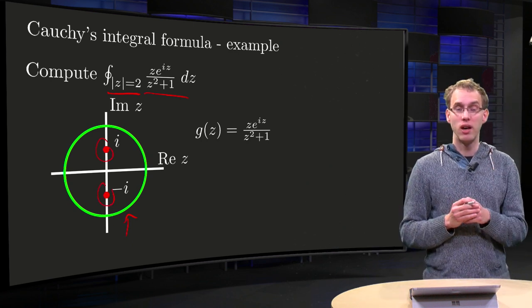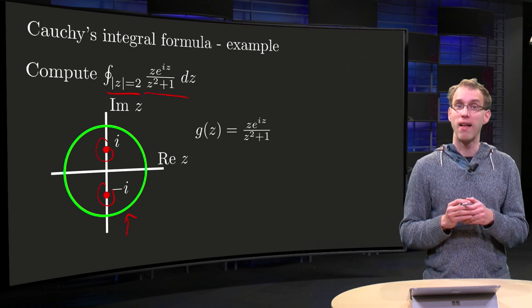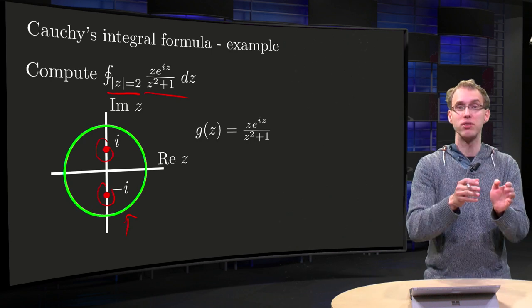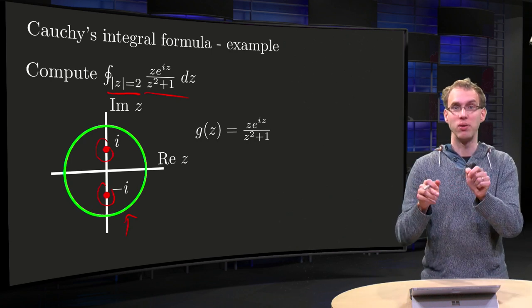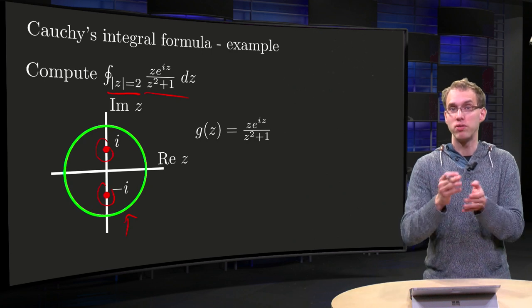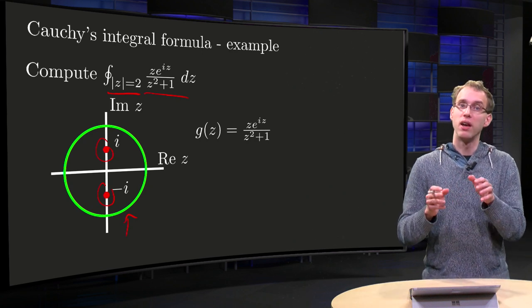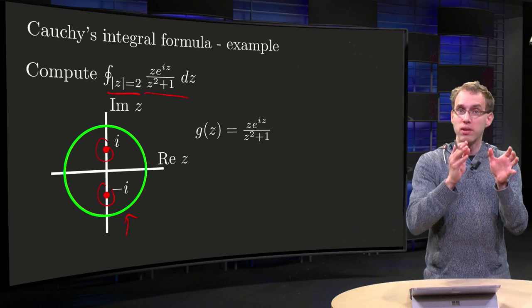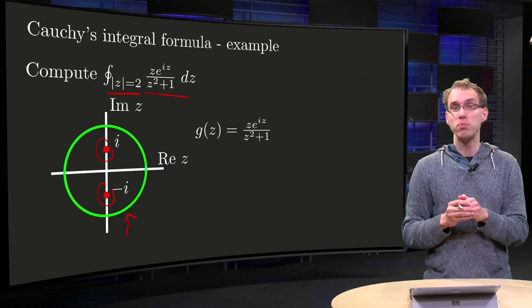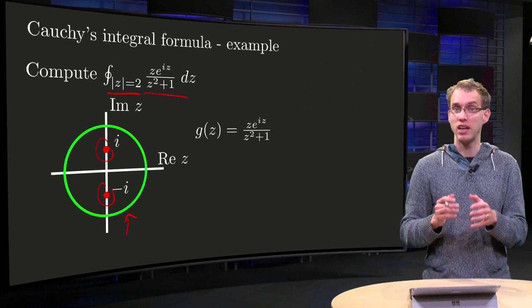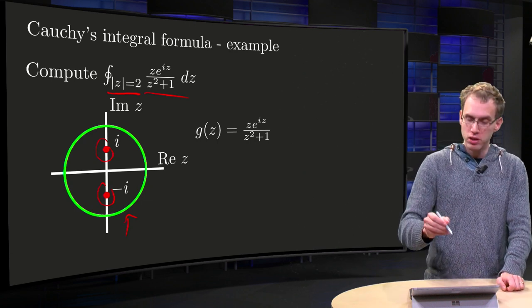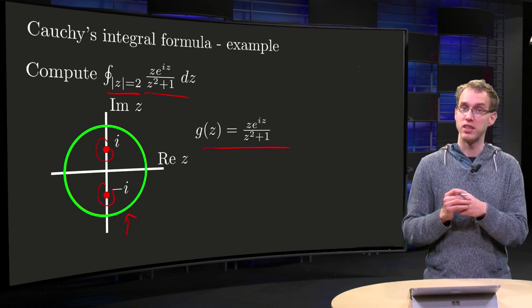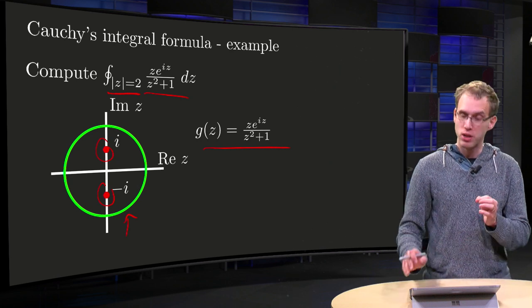So we cannot use Cauchy's integral formula directly, because for that we have to write it as some analytic function times 1 over z minus z₀. And we cannot do that because we have two singularities. We can write maybe something like analytic times 1 over z plus i, but then the first part won't be analytic due to the singularity at z equals minus i, so we have a problem. Let's define for convenience g(z) equals z·e^(iz) over z² + 1. So what can we do?